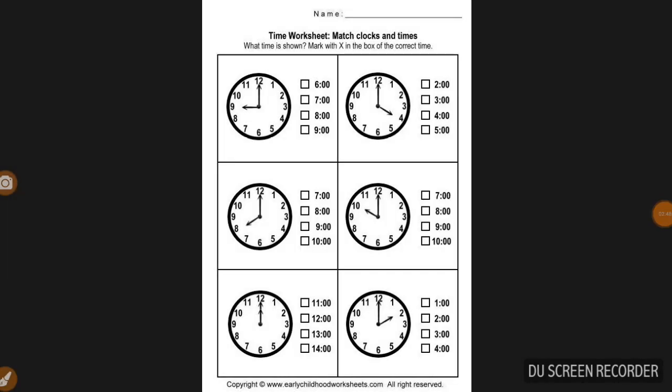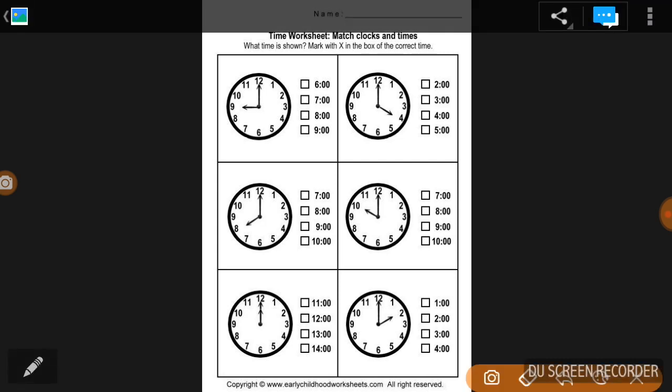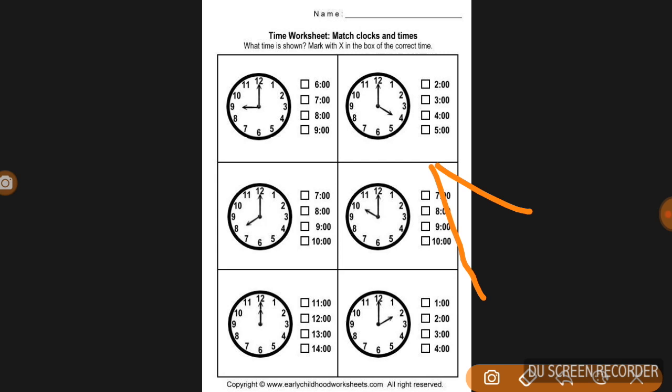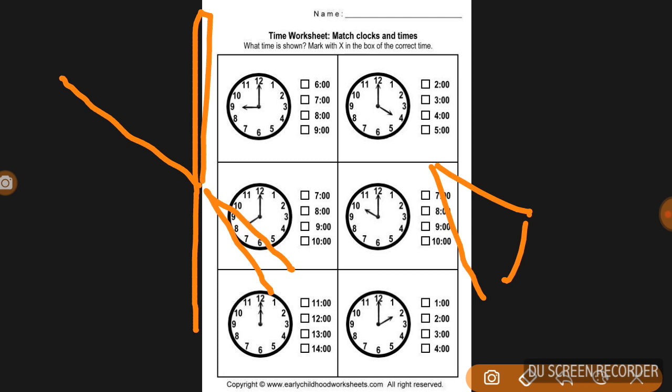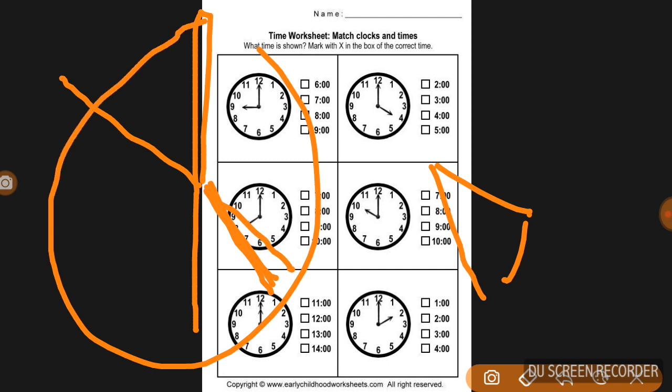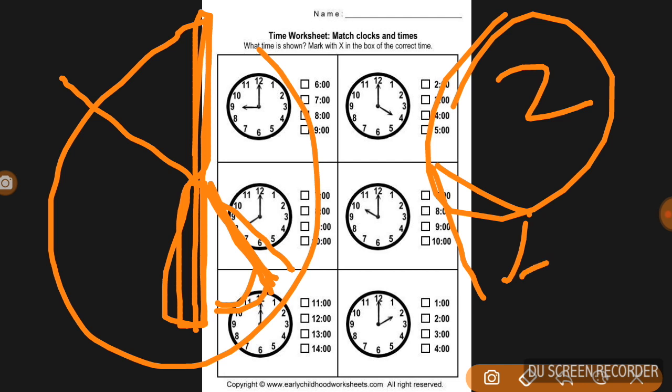I need to clarify when hands coincide versus when they are in opposition. When they coincide, they overlap at the same position. When in opposition, they are at opposite positions on the clock. Past the hour, hands move into different positions.